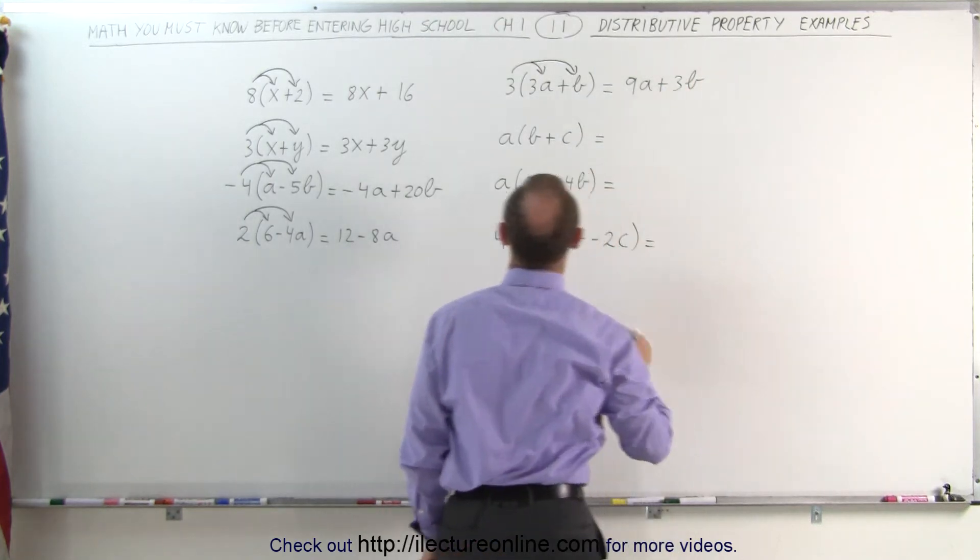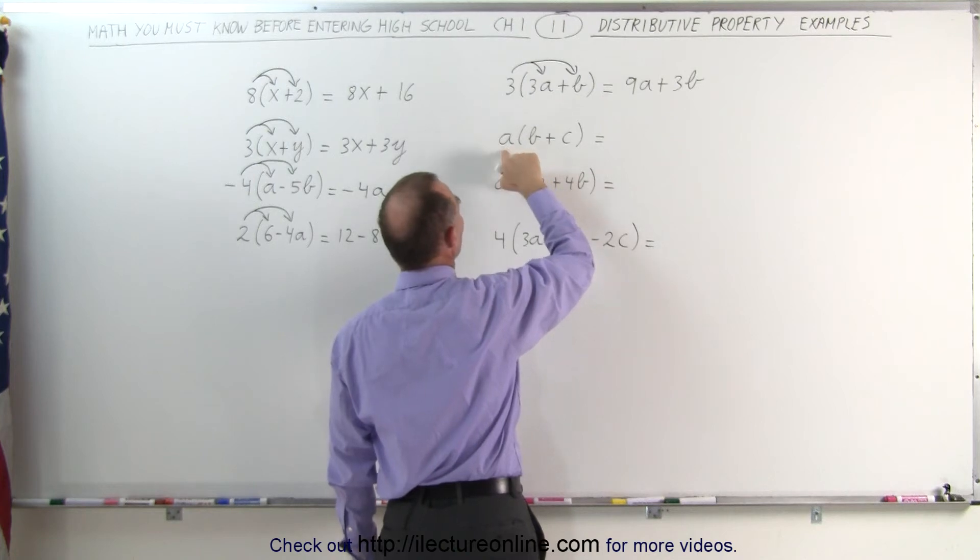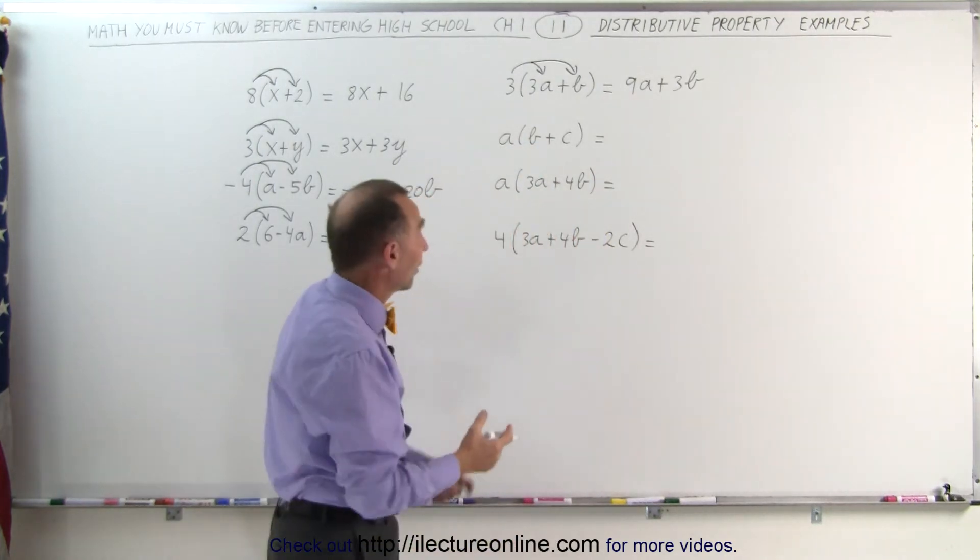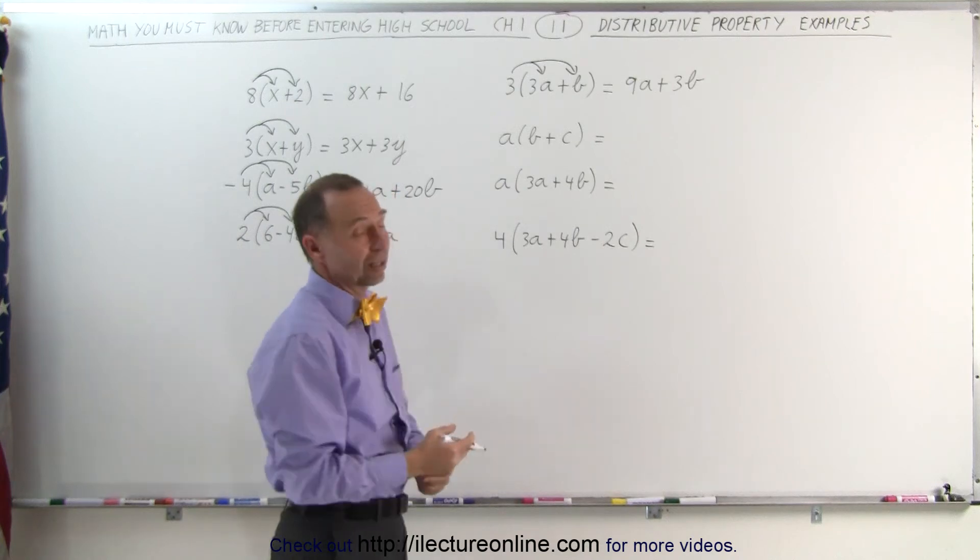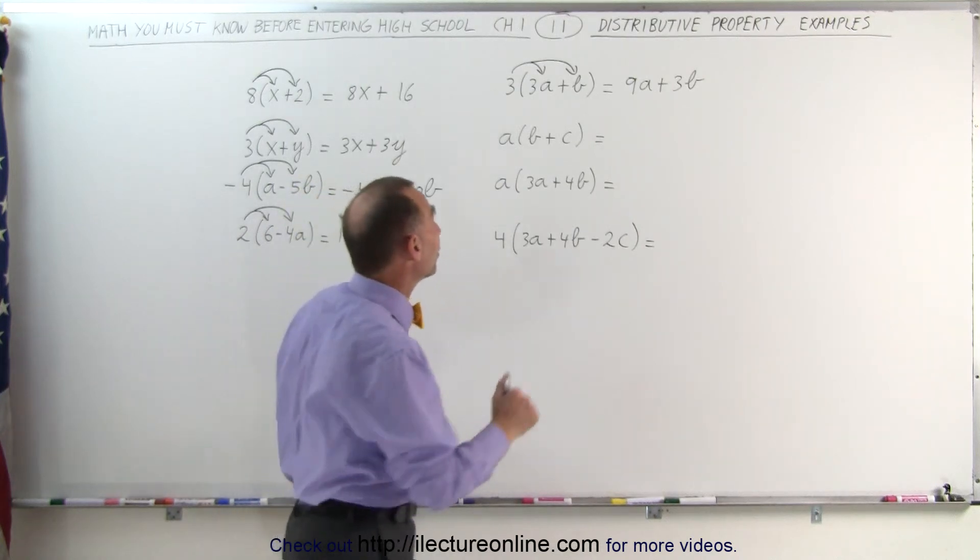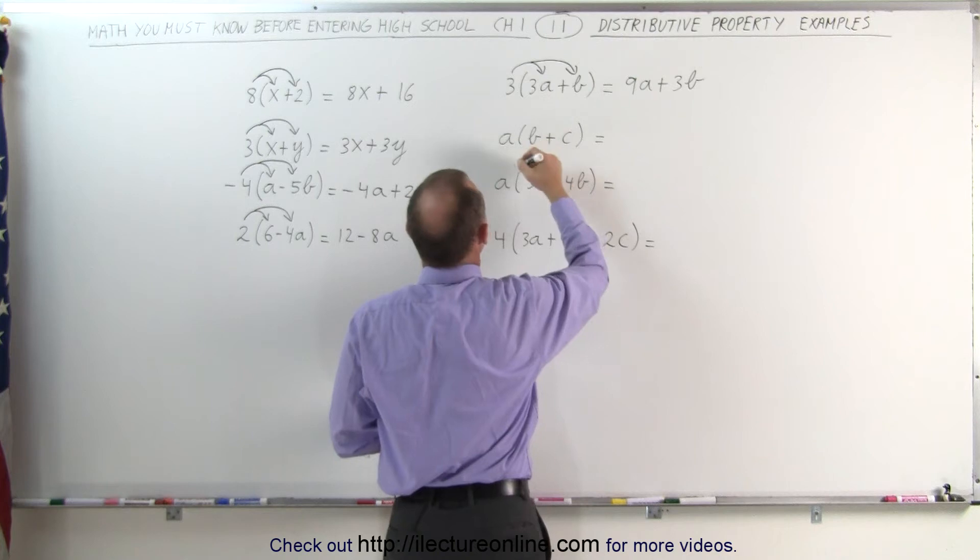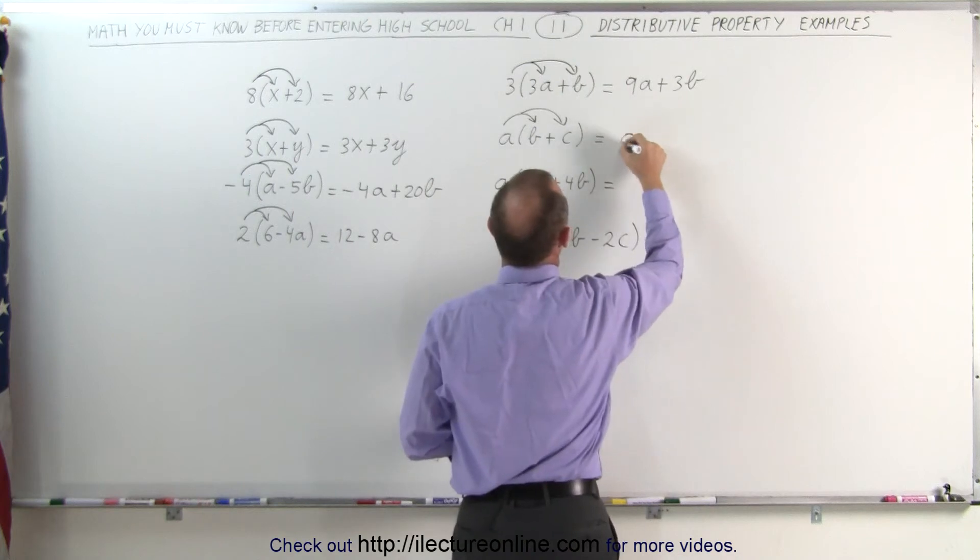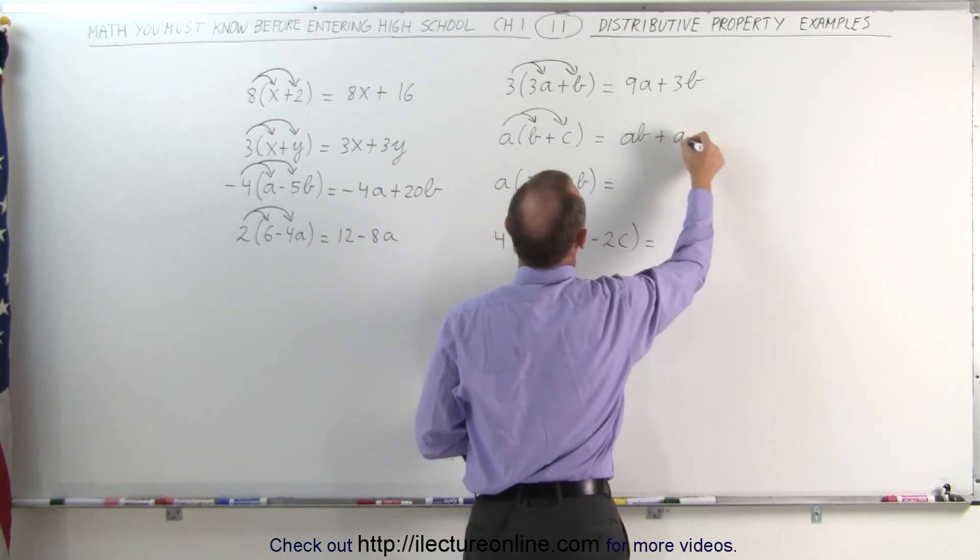Here we're going to distribute the variable a with the variable b and c. Sometimes they're also called constants. A variable means it can take on any value. A constant means it's a specific value. So let's say that there are specific values a, b, and c. I multiply a times b and a times c. So I get ab plus ac.